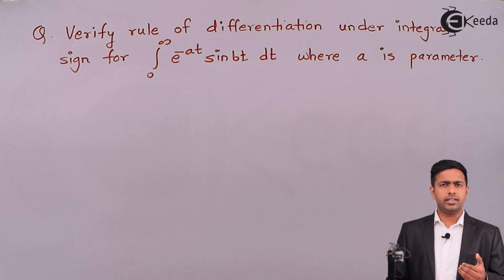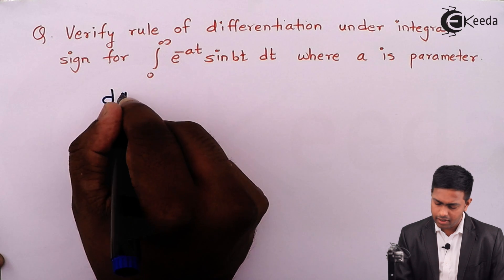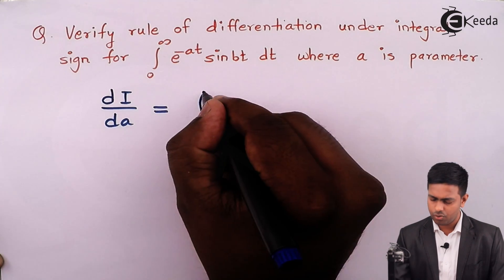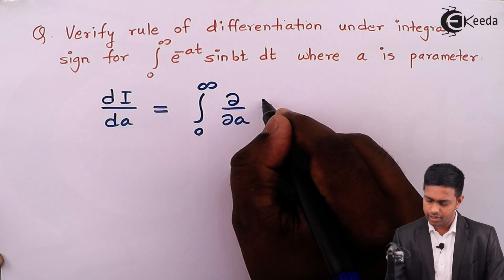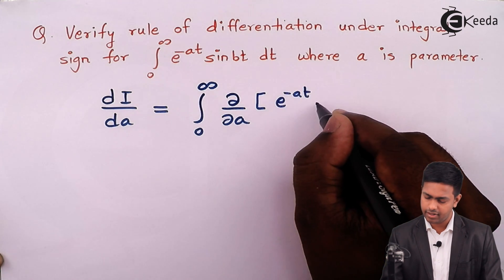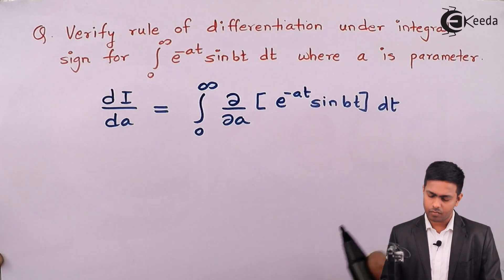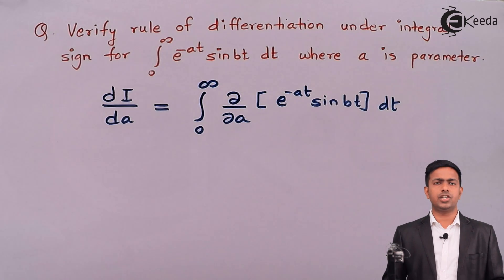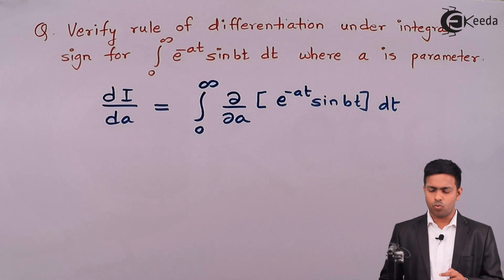For that, let's see what the rule of DUIS states. DUIS says that dI by dA is equal to integration from 0 to infinity of the partial derivative with respect to A of the function e raised to minus at sin bt dt. This is the rule of DUIS — that is, differentiation under integral sign.